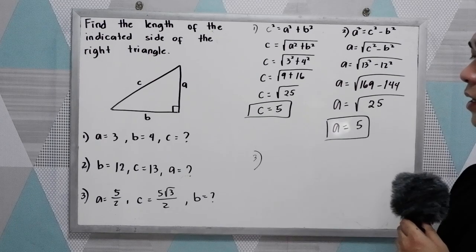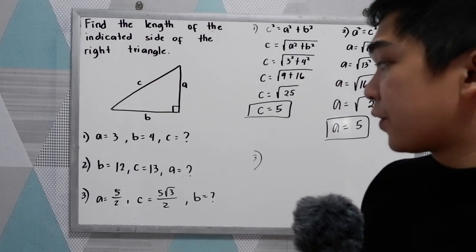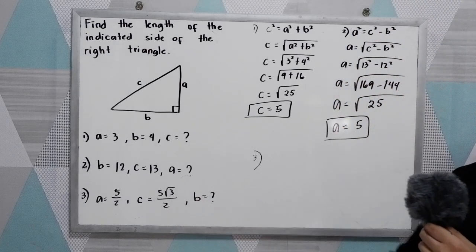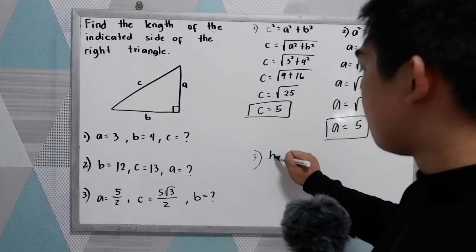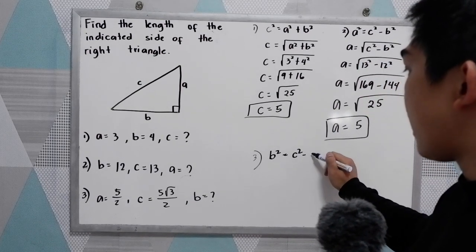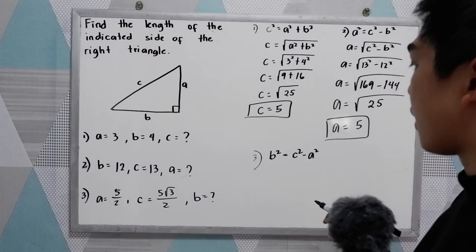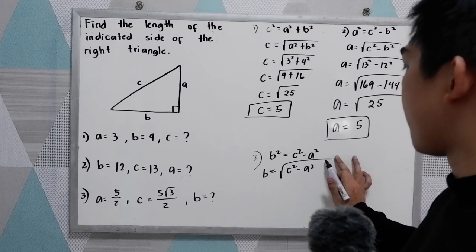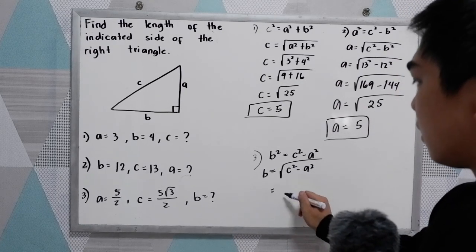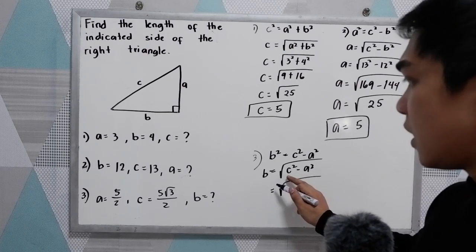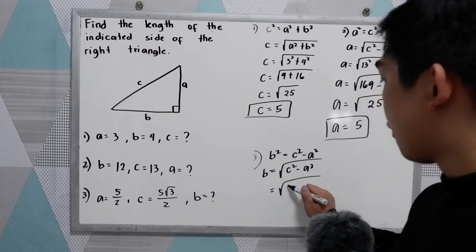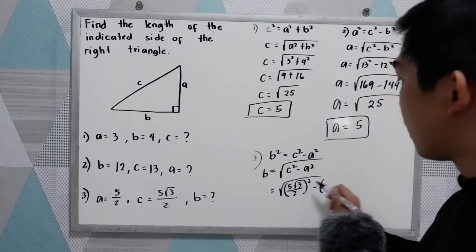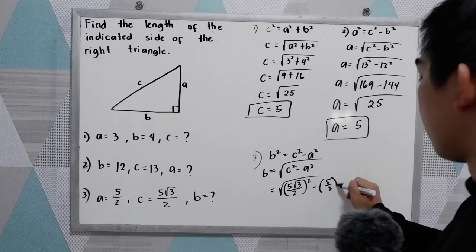Number 3: a equals 5/2, c equals 5√3/2, and we are looking for b. The formula is b squared equals c squared minus a squared, so b equals the square root of c squared minus a squared. Substituting: b equals the square root of (5√3/2) squared minus (5/2) squared.